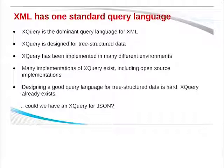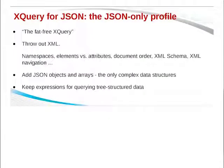Could we have an XQuery for JSON? Well, one thing you might want is to get rid of XML altogether. JSONiq has two profiles — one of them gets rid of XML entirely. That means you get rid of namespaces, having to worry about elements versus attributes, document order, XML schema, XML navigation — all that complexity goes out the window. That's a huge percent of the complexity of XQuery. The most complex thing about XQuery is XML. XPath navigation is much more complex than what you need for JSON.